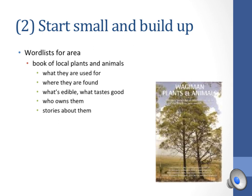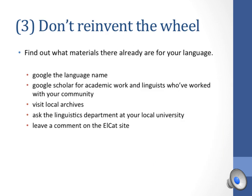Here's a book that started as a word list and has now moved into a full documentation of plants and animals — Wagyman Plants and Animals. Wagyman is a language from the central part of Northern Australia. From your word list of even five or ten different plants and animals, you could build up to a whole book. So you can see why it's important to start small and build up, and how easy it is to expand once you have a foundation to work from.